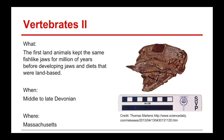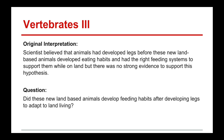This occurred during the middle to late Devonian era, and the paper was written in Massachusetts, though this type of occurrence happened everywhere around the world. The original interpretation was that scientists believed that animals had developed legs before these new land-based animals developed eating habits and the right feeding systems to support them while on land, but there is no strong evidence to support this hypothesis.